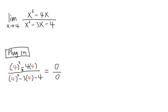On the top, this is 16 minus 16, we get 0. On the bottom, this is 16 minus 12 minus 4, we also get 0. In other words, we have a 0 over 0 situation.